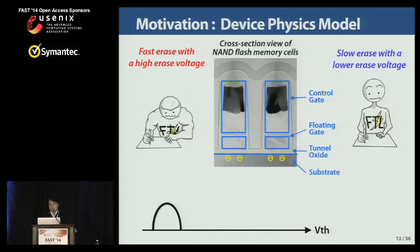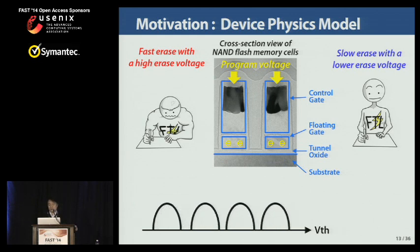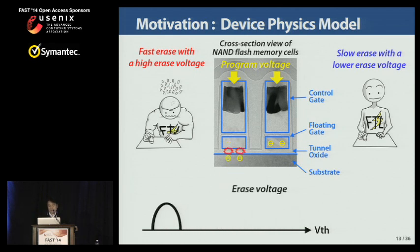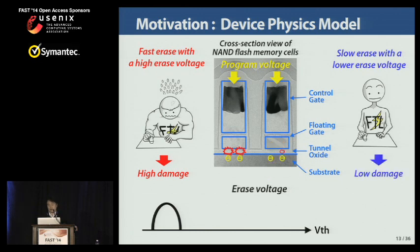This figure is a cross-section view of NAND flash memory cells. In a program operation, when a program voltage is applied to the control gate, electrons are injected into the memory cells and stored as different threshold voltages. In an erase operation, when an erase voltage is applied to the memory cell, they are erased so that threshold voltages move down to the erased state. In this erase operation, memory cells are mainly damaged by a high erase voltage. When memory cells are slowly erased with a lower erase voltage, they are less damaged. Therefore, erase voltage and time have a critical impact on improving NAND endurance.